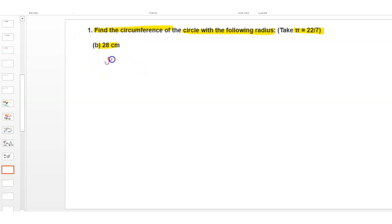First, we write radius = 28 cm and we have to find the circumference of the circle. The formula used here is circumference of circle = 2πr = 2 × π.